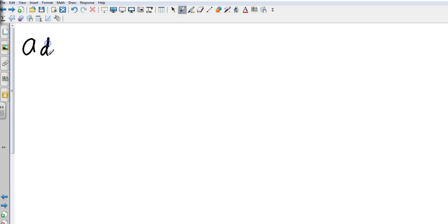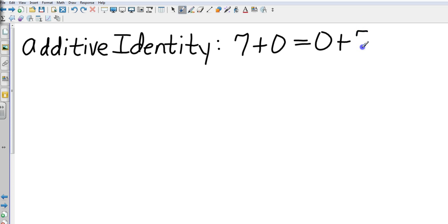Now we're going to go to additive identity. Additive identity, think to yourself, what can I add to a number that's going to keep it itself? What can we add to anything that doesn't change it? And that value is zero. So let's say I took the number seven and I added zero to it. The additive identity would tell me that it's the same as zero plus seven, which means seven equals seven. So that's additive identity.